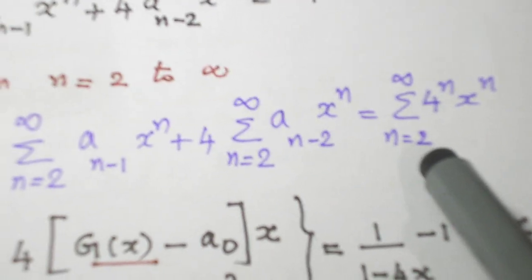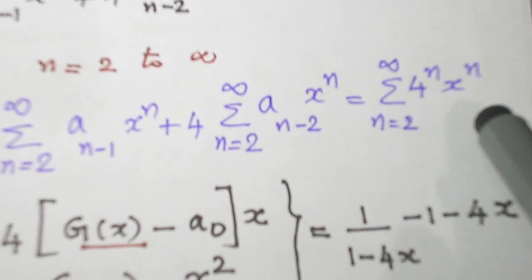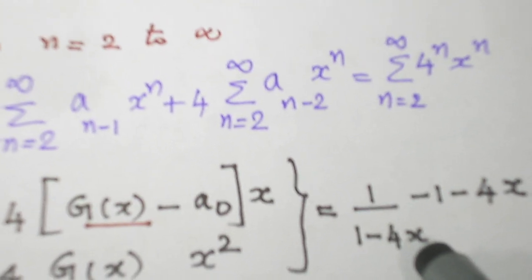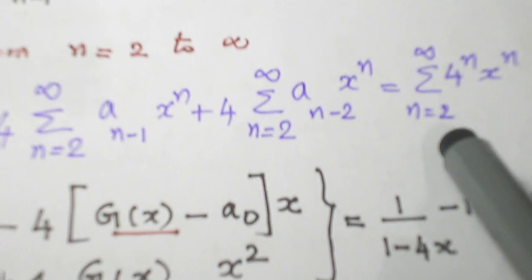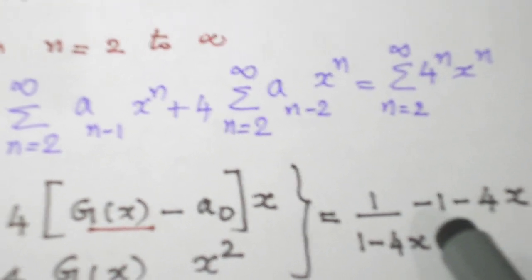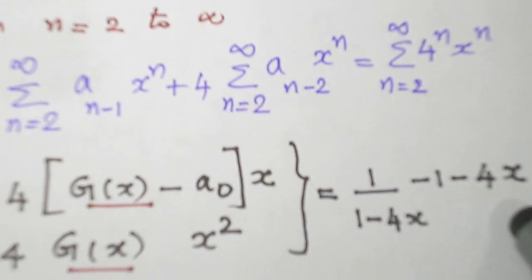And n = 2 to infinity, 4^n x^n, a^n x^n is 1/(1-ax). And since it starts from 2, the first two terms I have to subtract. Minus 1 and minus 4x I have to subtract.